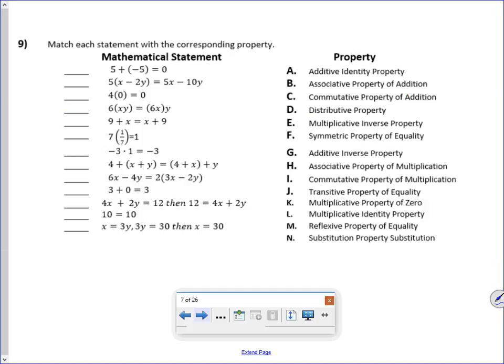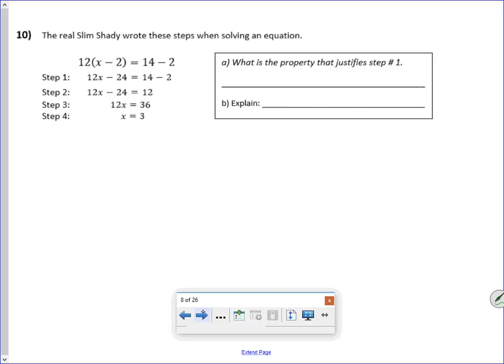All right. Match each statement with the corresponding property. And if you've completely forgotten your properties, this is actually a nice way for you to learn them. And so I'm just going to write them all down. This is G, D, K, H, C, D, L, B, D, A, F, M, J. And what you'll notice is that D comes up twice.